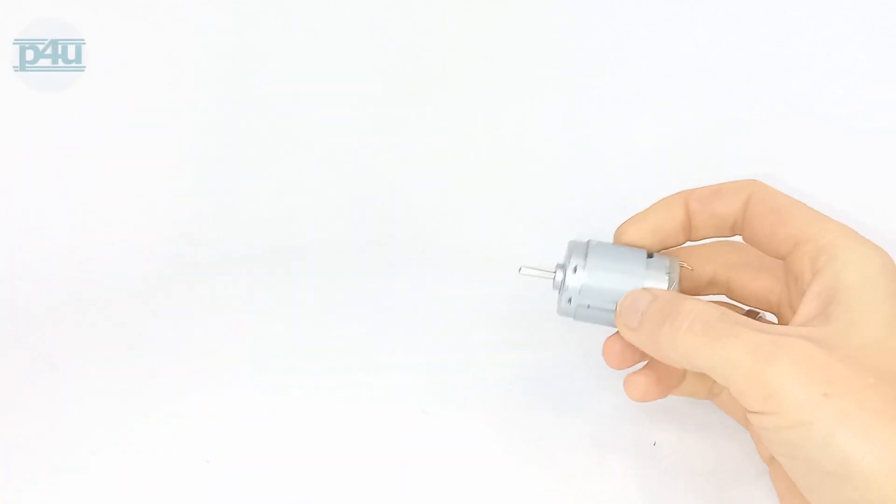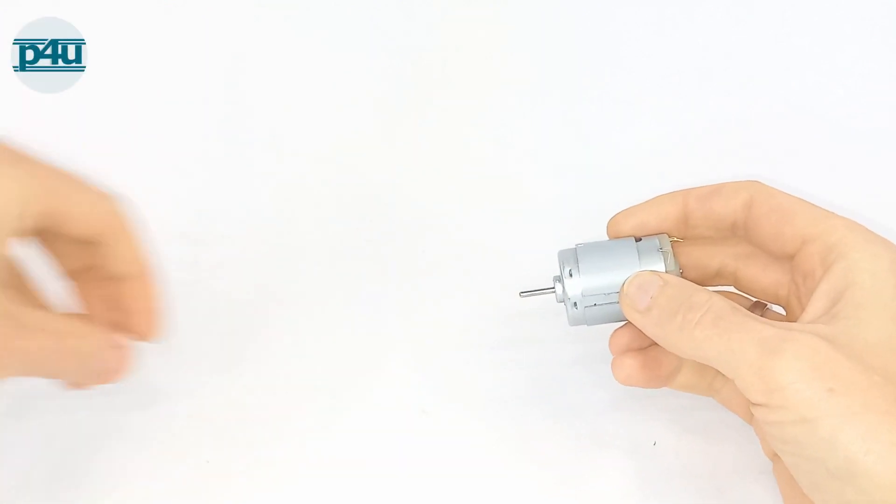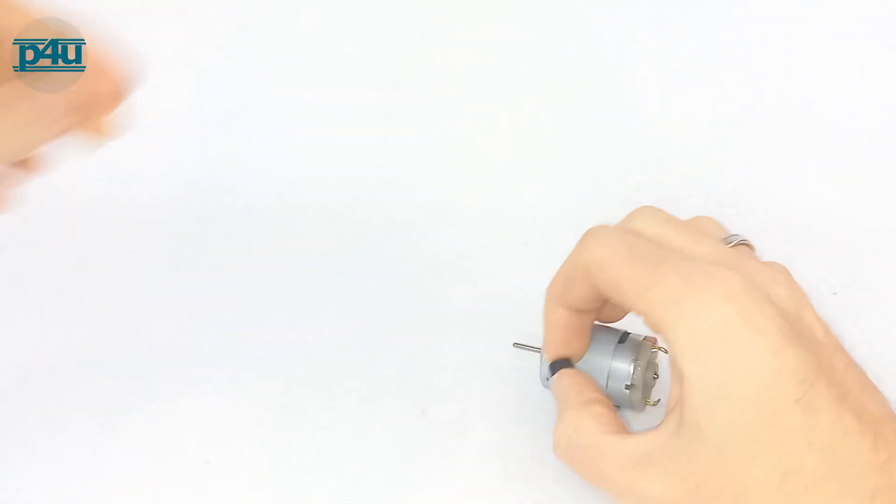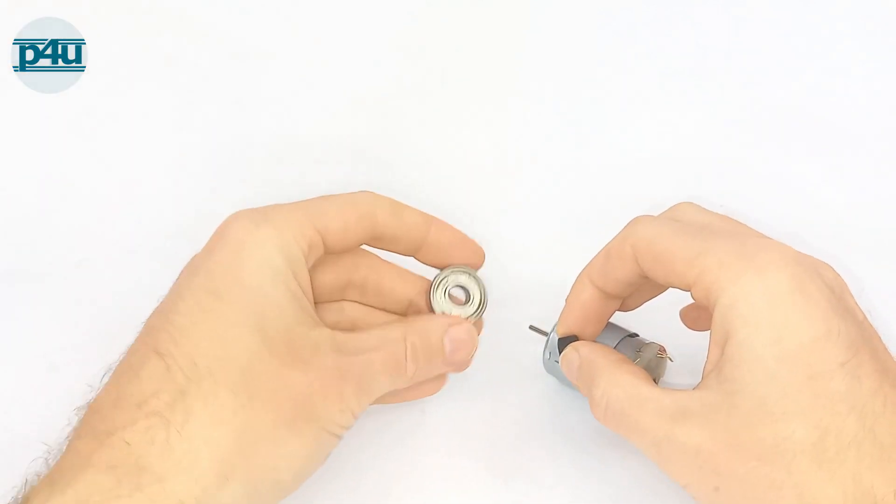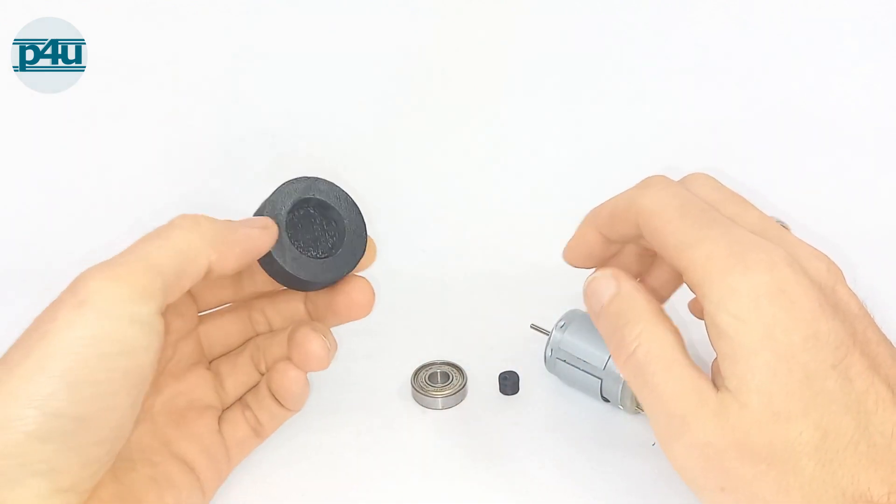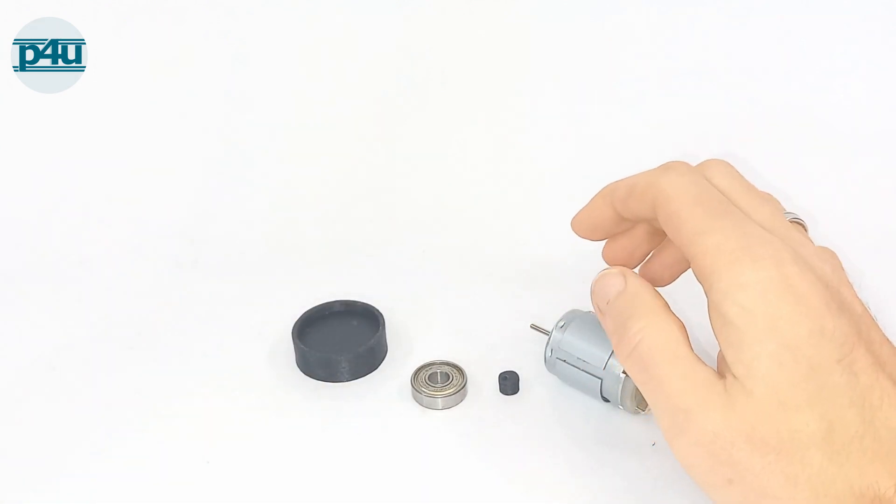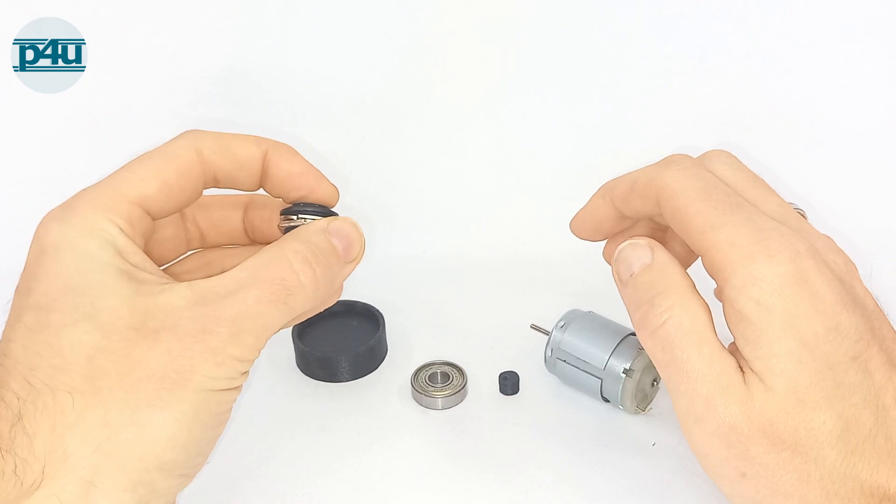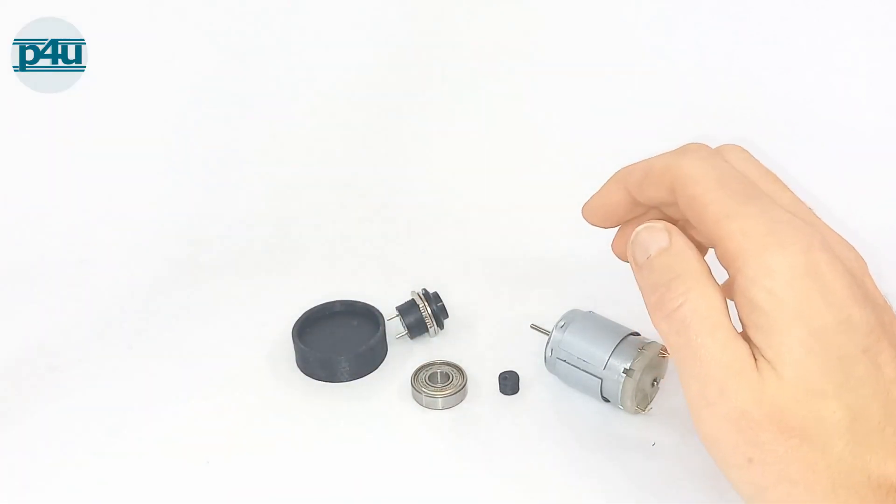The main part of the shaker is this engine. And we need a little excenter and a bearing and a plate.